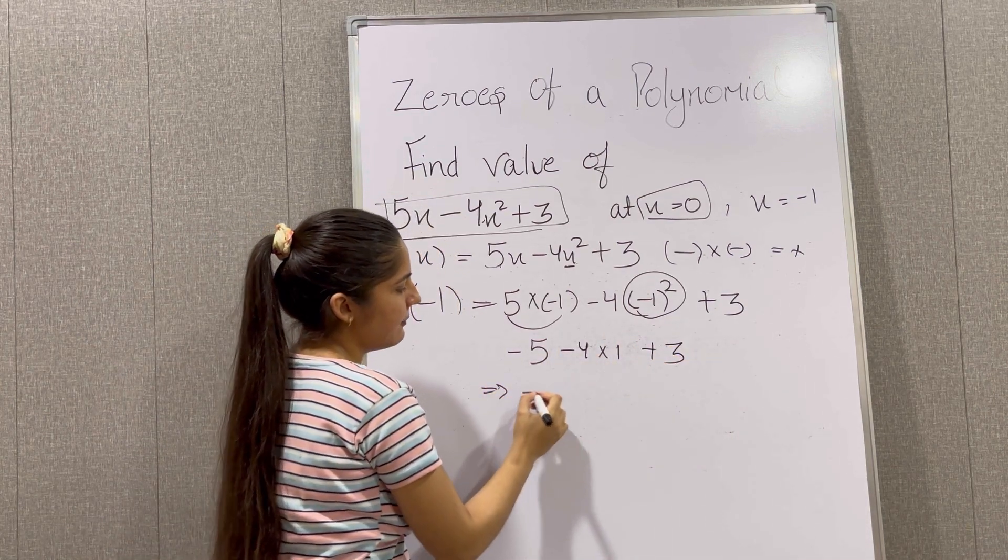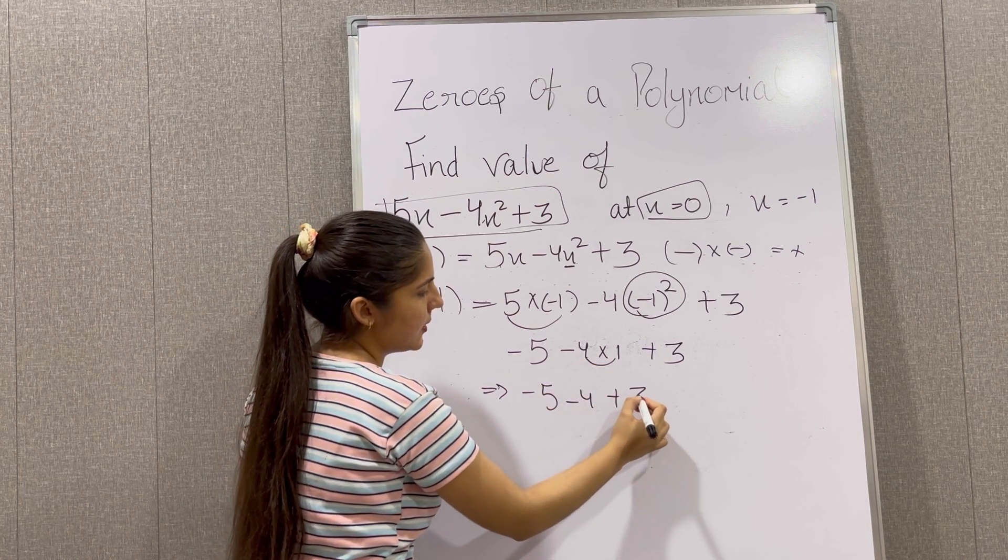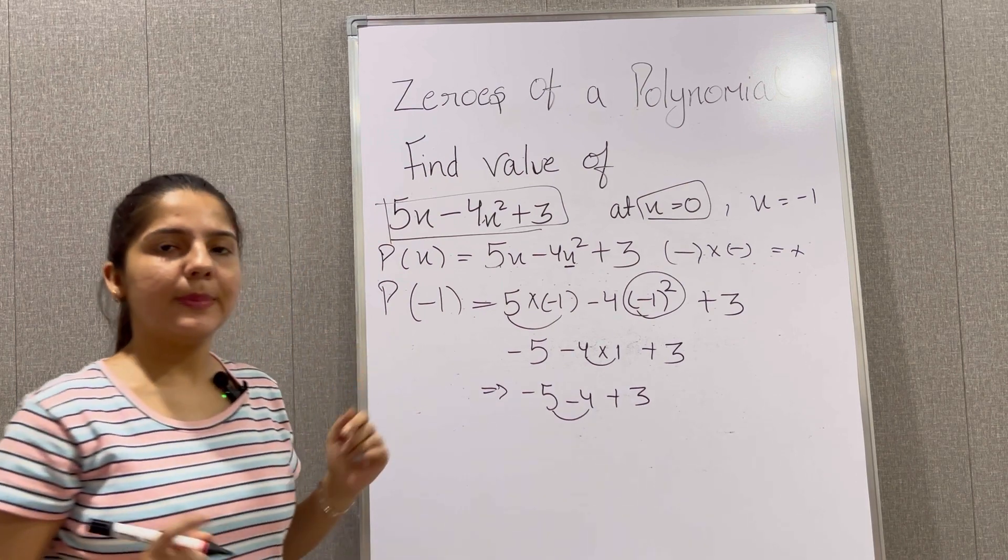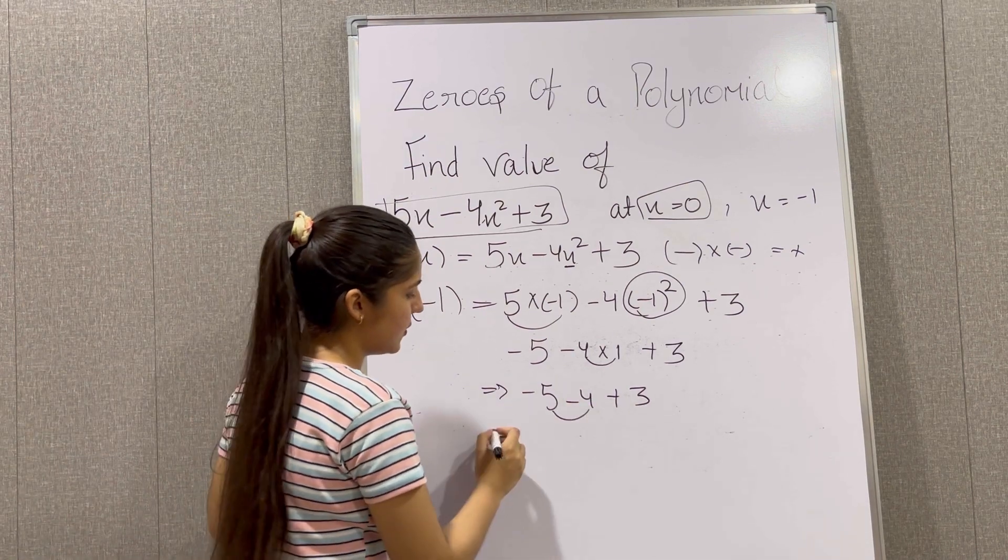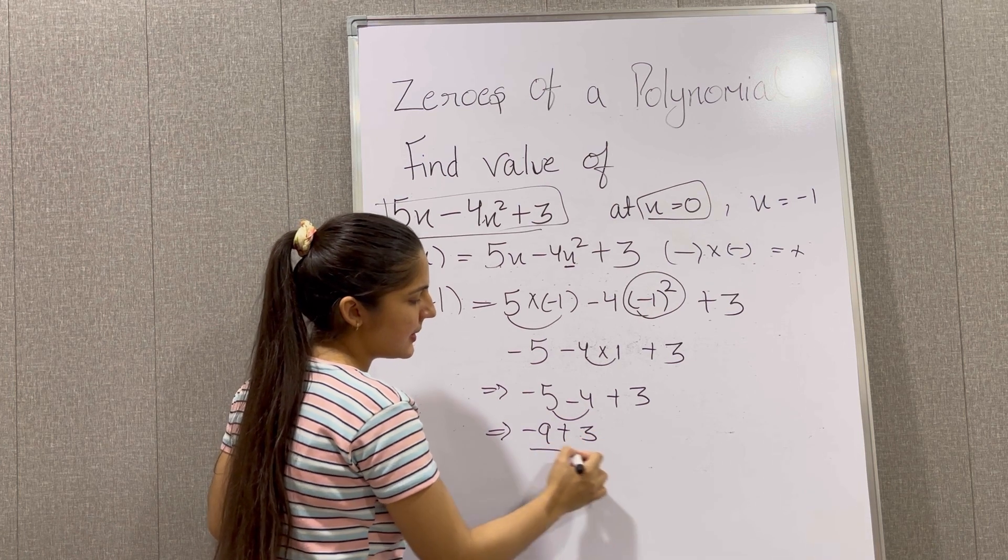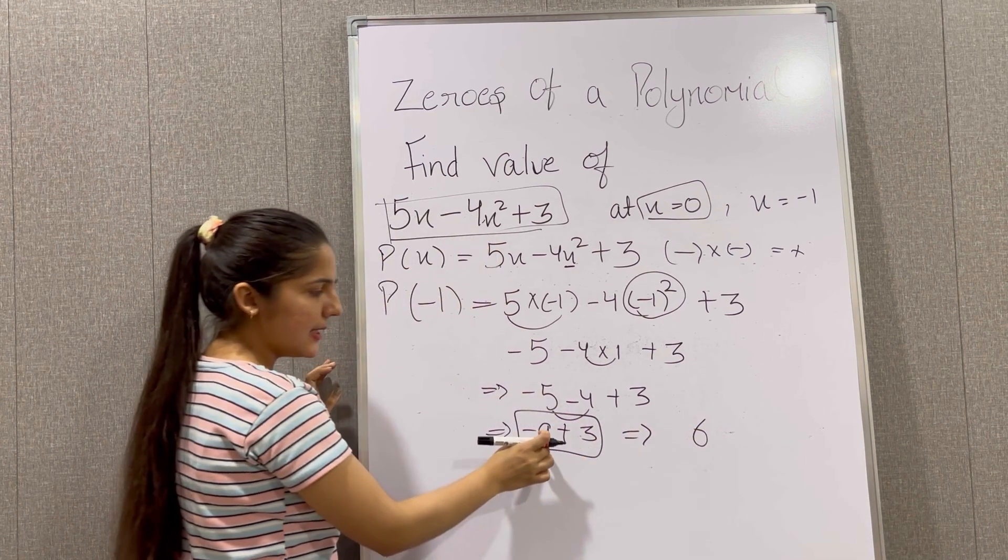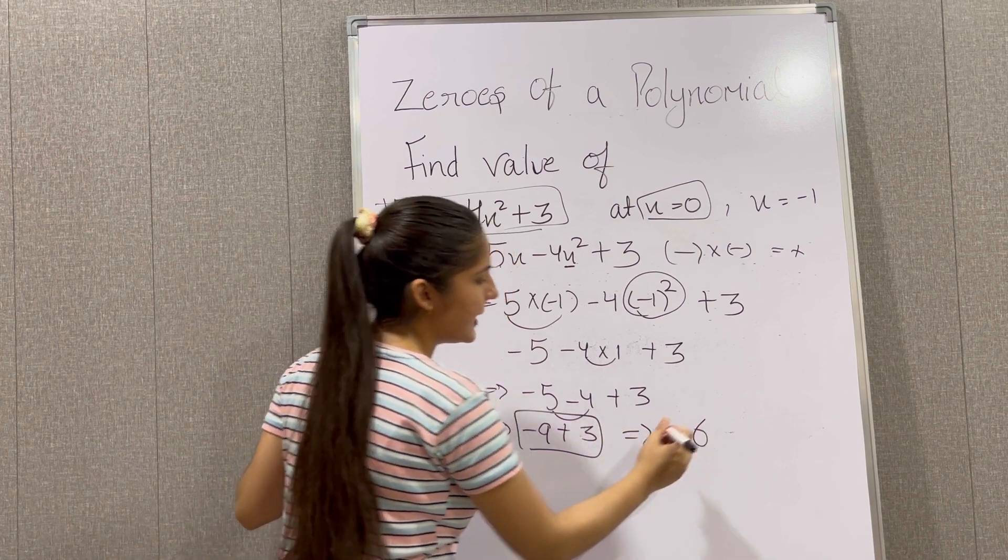Now minus 5, minus 4 plus 3. So minus 5 minus 4 gives us minus 9, plus 3 gives us minus 6. Minus 6 is the answer when we put x equals minus 1.